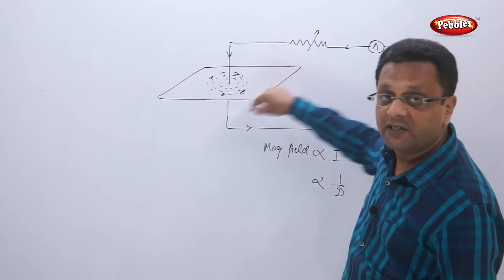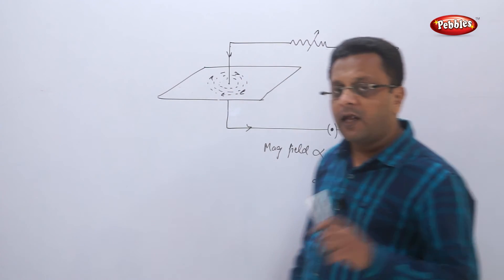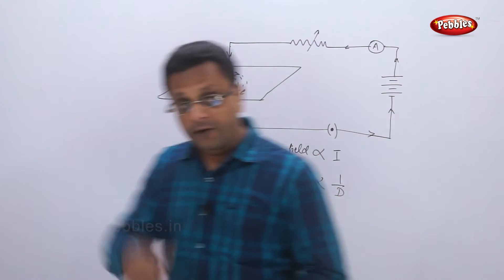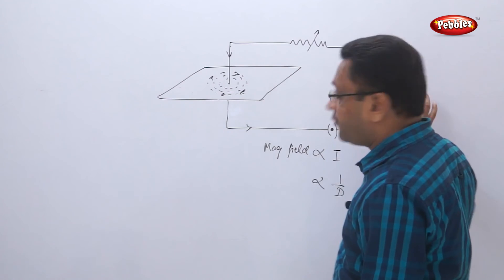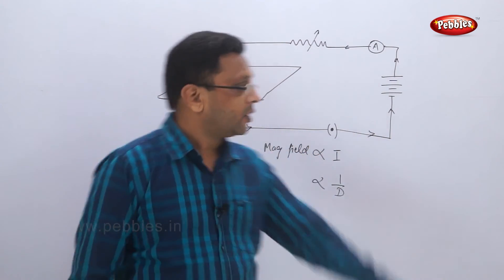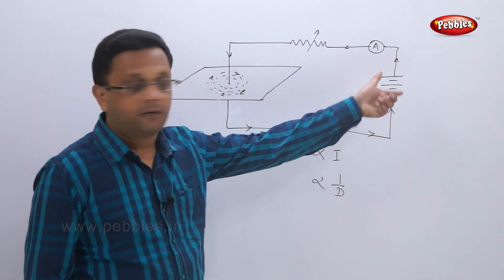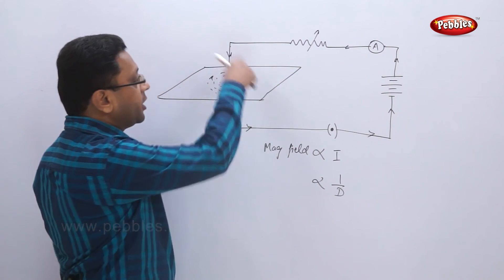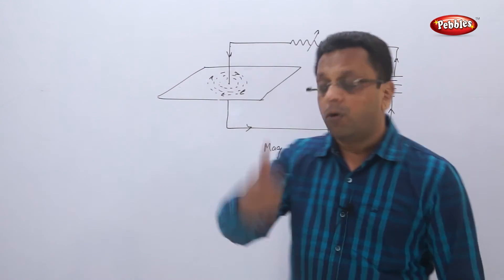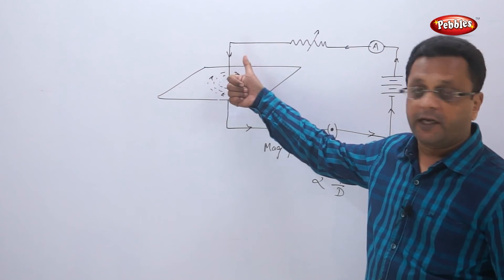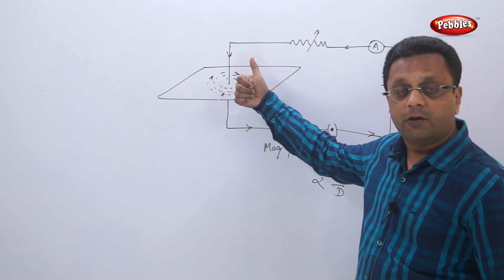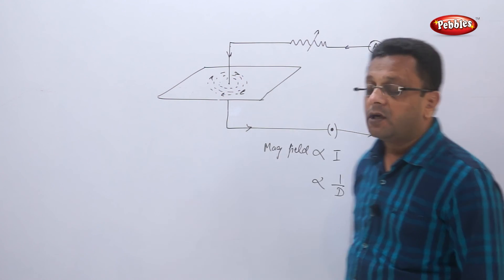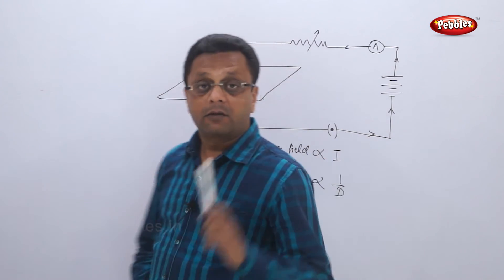The direction of the magnetic field is in a clockwise direction. Now, what will happen if you reverse the current? If this battery is turned so that the negative and positive are swapped, the current will be reversed. When I hold the conductor now, the magnetic field also takes the reverse direction. This is called the right-hand thumb rule.